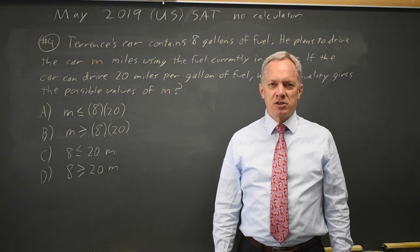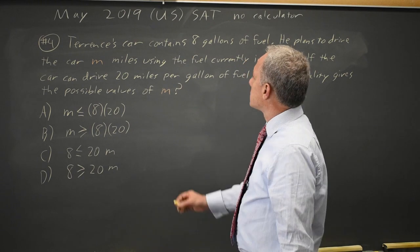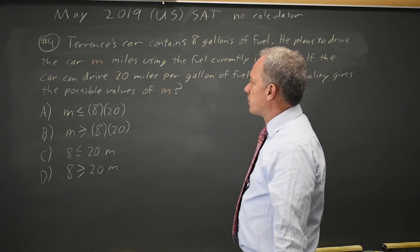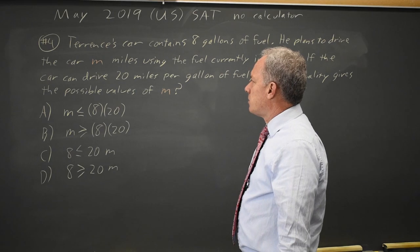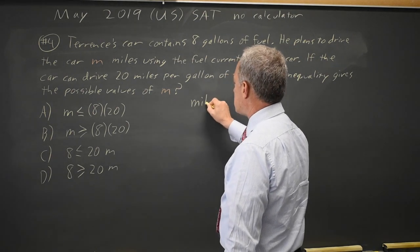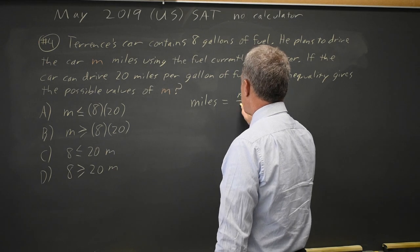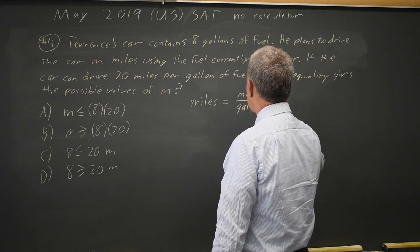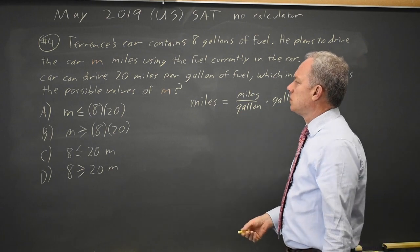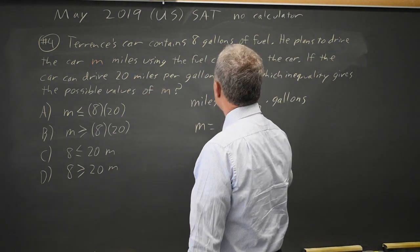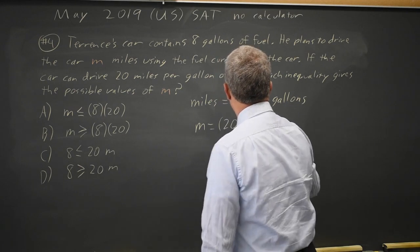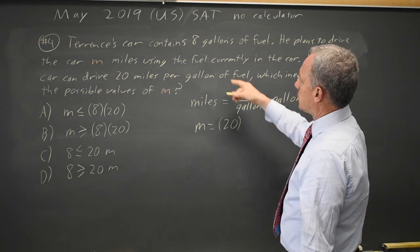This is calculator question number four for the May 2019 U.S. exam. The College Board gives us a word problem describing a car with eight gallons of fuel and we want to drive m miles using that amount of fuel. If the car gets 20 miles per gallon, the question is what are the possible values of m miles? We know that miles equals miles per gallon times gallons, because the units gallons will cancel gallons in the denominator. So miles are m, miles per gallon is 20 miles per gallon, and gallons are given as eight.